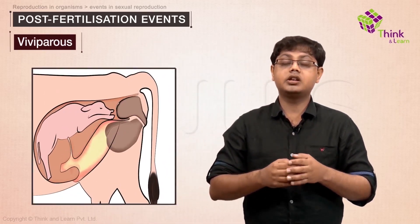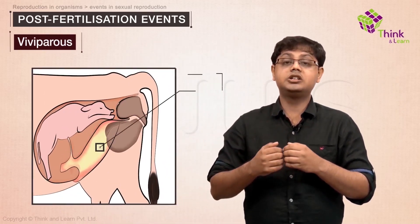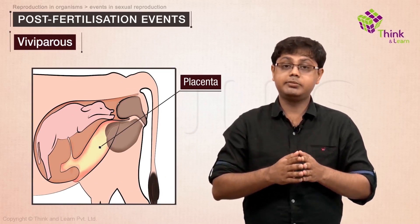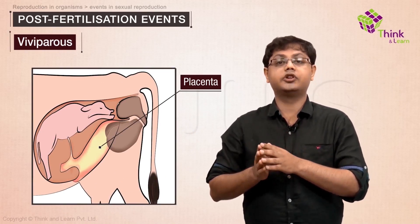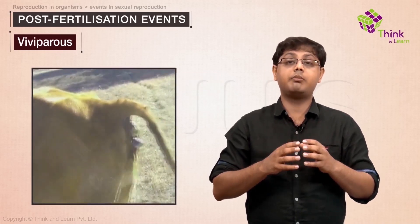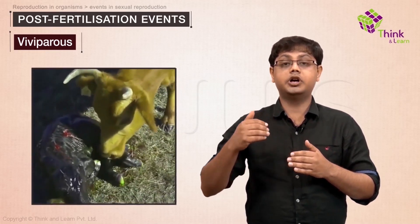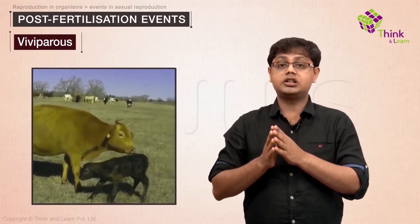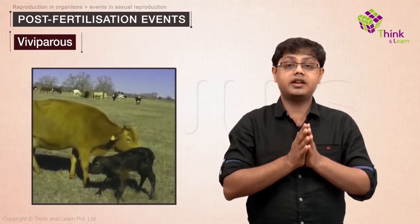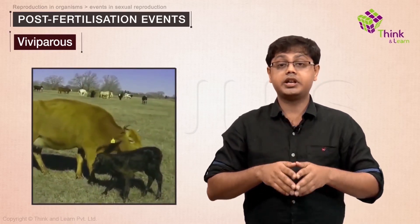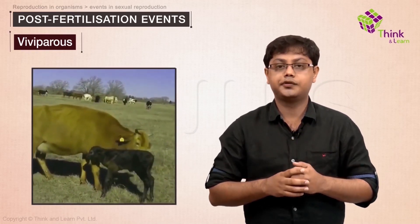In viviparous animals, the embryo is implanted in the female body and derives nourishment from the parent. These animals provide maximum care for the embryo, nourishing it until it grows into a fully formed fetus, and then give birth to the young ones — for example, mammals. Embryonic care and protection is greatest in these animals, giving their offspring the highest chances of survival.